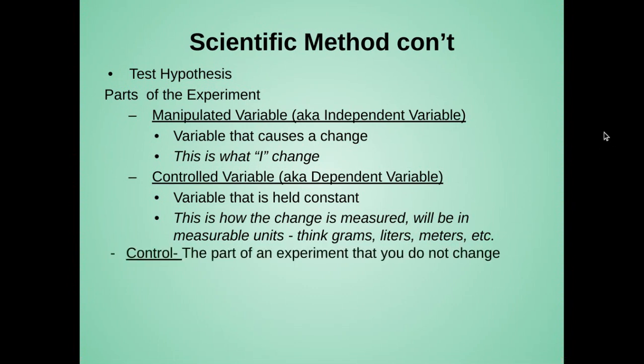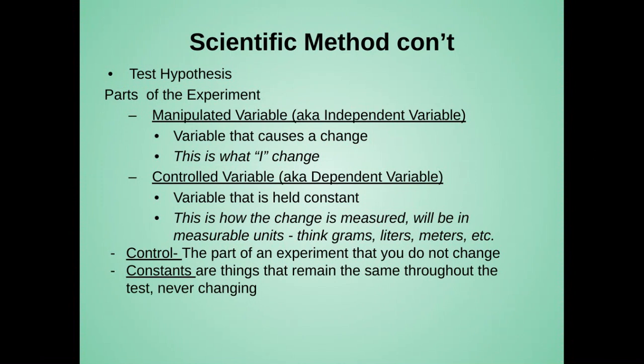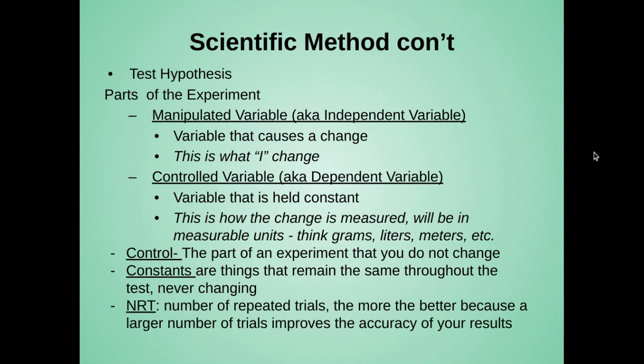A control is a part of an experiment that you do not change. You leave it alone so that you have something that is not being changed. So you can't say it might have been because of this, or it could have been because of that. So the control is a controlled test subject that doesn't experience the variables. Constants are those things that remain the same throughout the test. They never change. And the NRT is the number of repeated trials. The more the better because a larger number of trials improves the accuracy of your results.